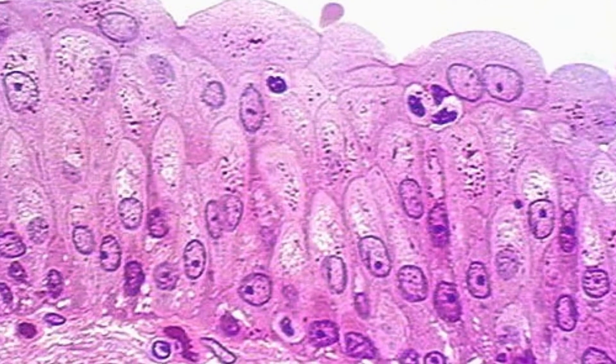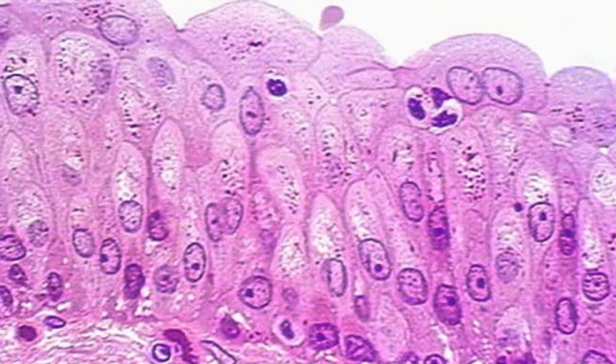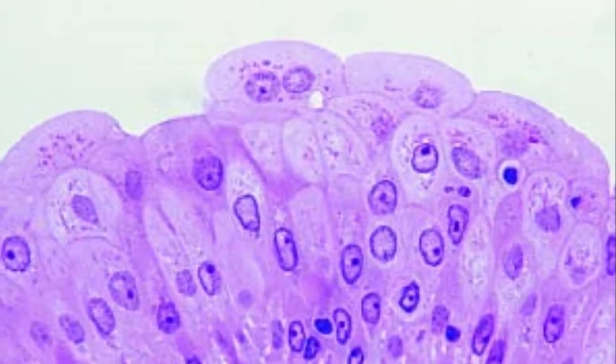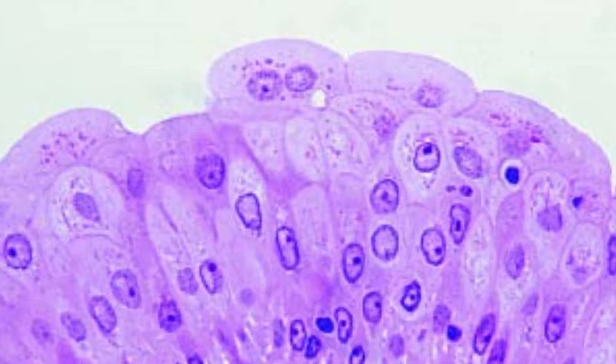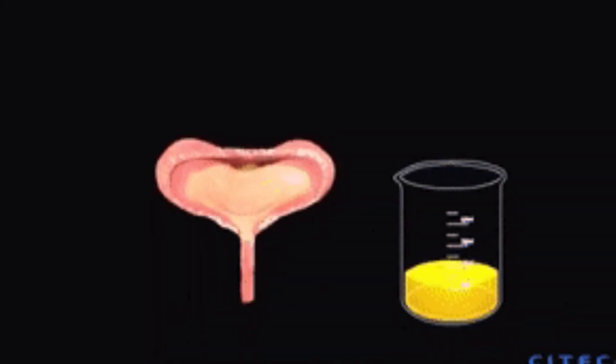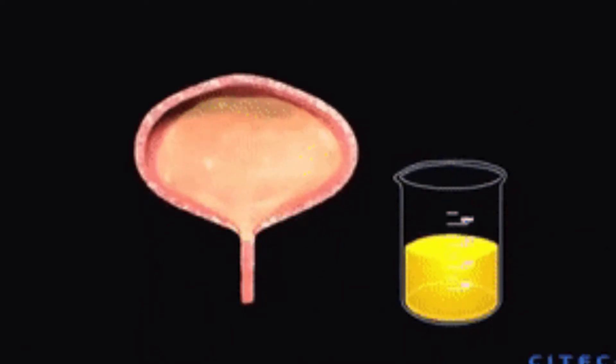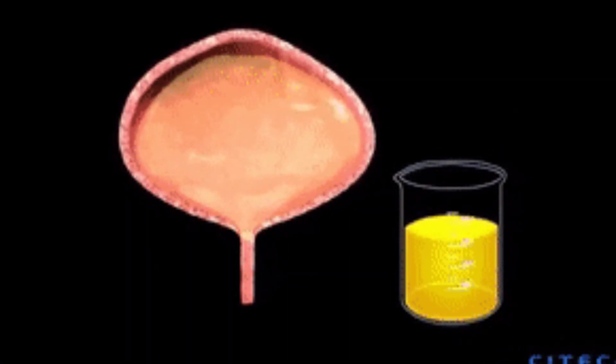When the bladder is empty, this epithelium is convoluted and has cuboidal apical cells with convex and umbrella-shaped apical surfaces. As the bladder fills with urine, the epithelium loses its convolutions and the apical cells transition from cuboidal to squamous.